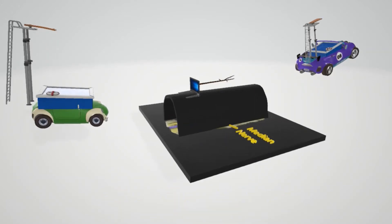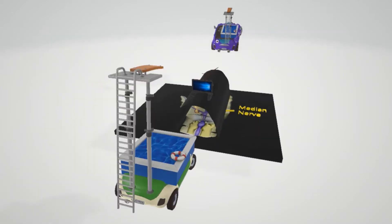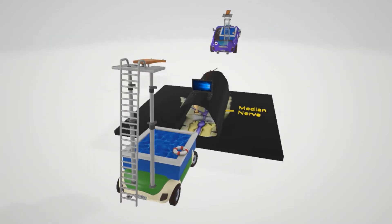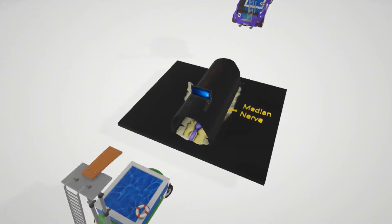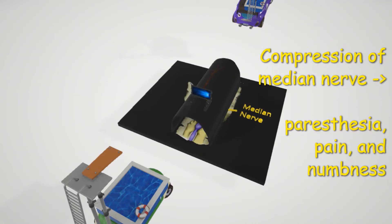What's going on here is that this tunnel passes right over the median nerve. In carpal tunnel syndrome, there's an entrapment of the median nerve in the carpal tunnel, which leads to nerve compression. This causes the symptoms seen in carpal tunnel syndrome: paresthesia, pain, and numbness in the distribution of the median nerve.